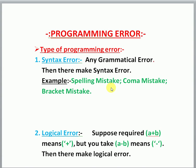What is a logical error? Suppose you are given a question to find the sum of two numbers. You write the program correctly — adding a header file, taking inputs, then computing sum = a + b. But if you mistakenly use minus instead of plus, the compiler finds no error, yet the result is wrong. This type of error is called a logical error.